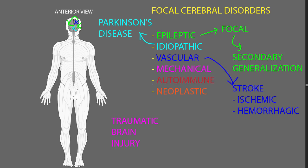Traumatic brain injury is a very common example of a mechanical disorder that can affect the brain in a focal way, causing a focal cerebral syndrome. There are all kinds of different types of trauma and severity of involvement of the brain tissue.